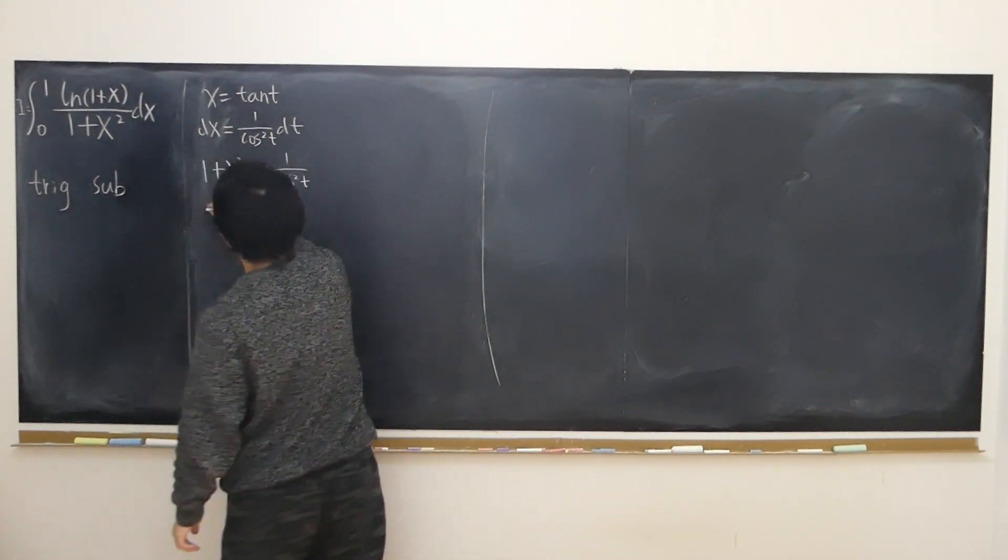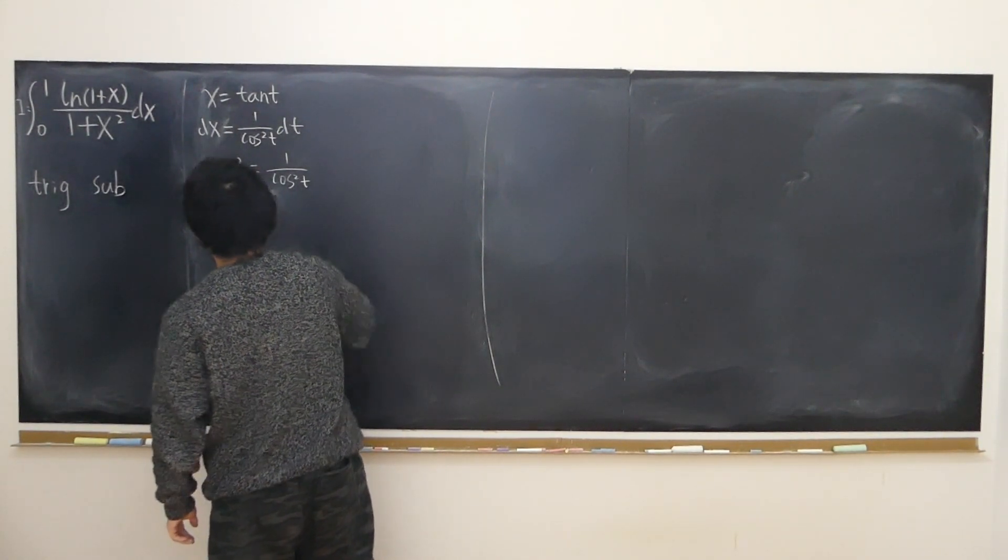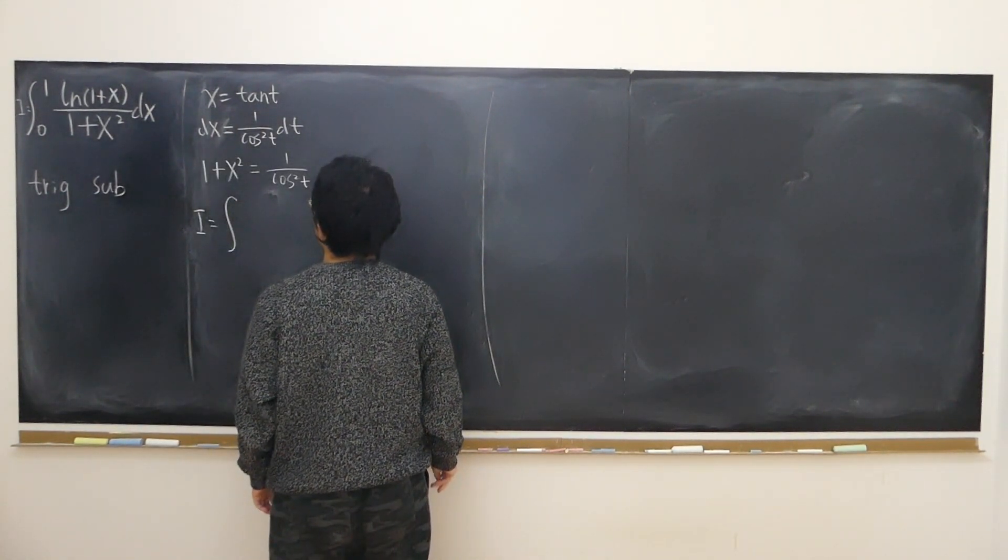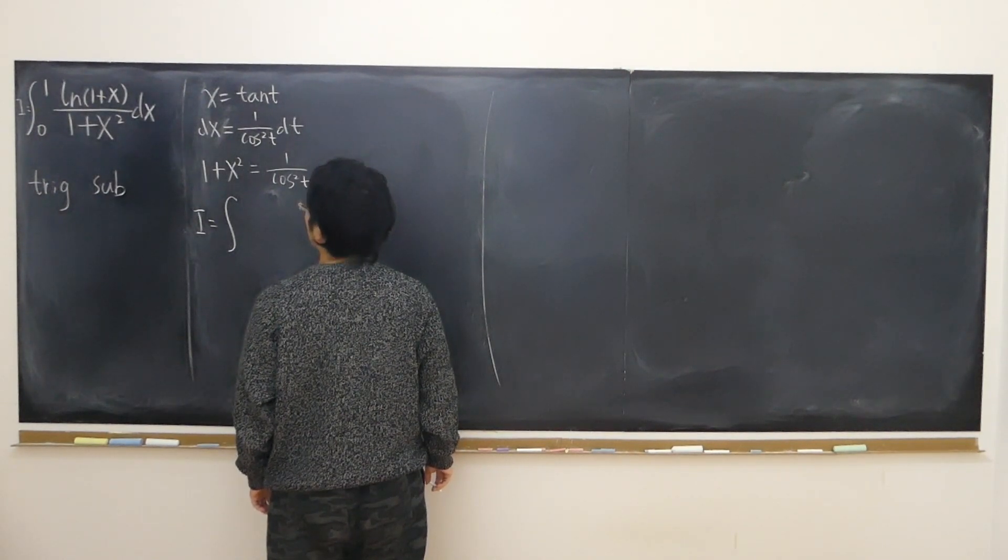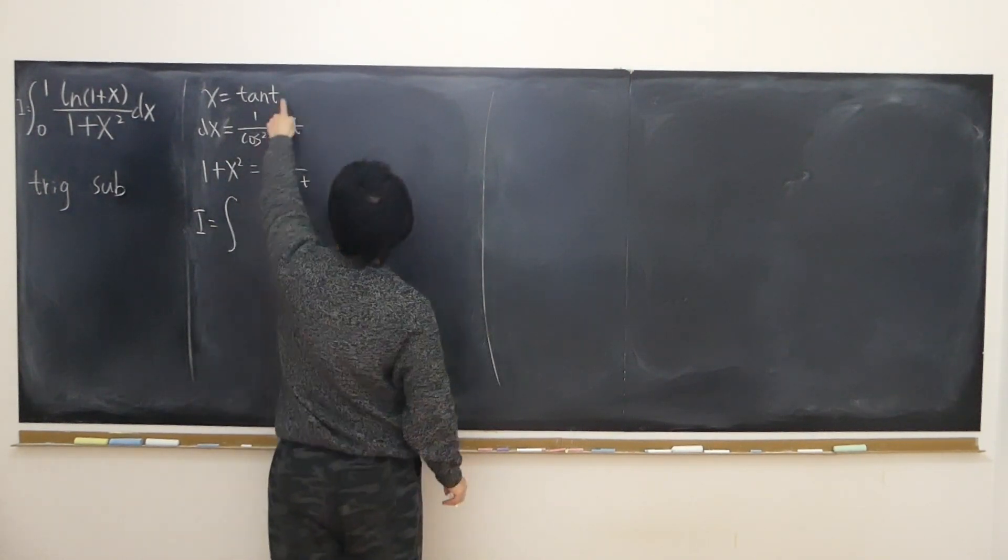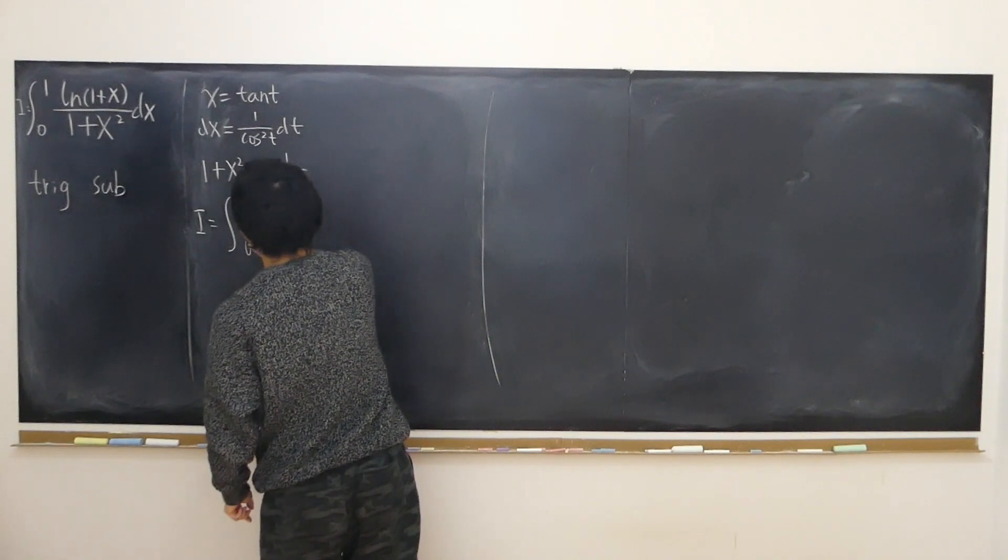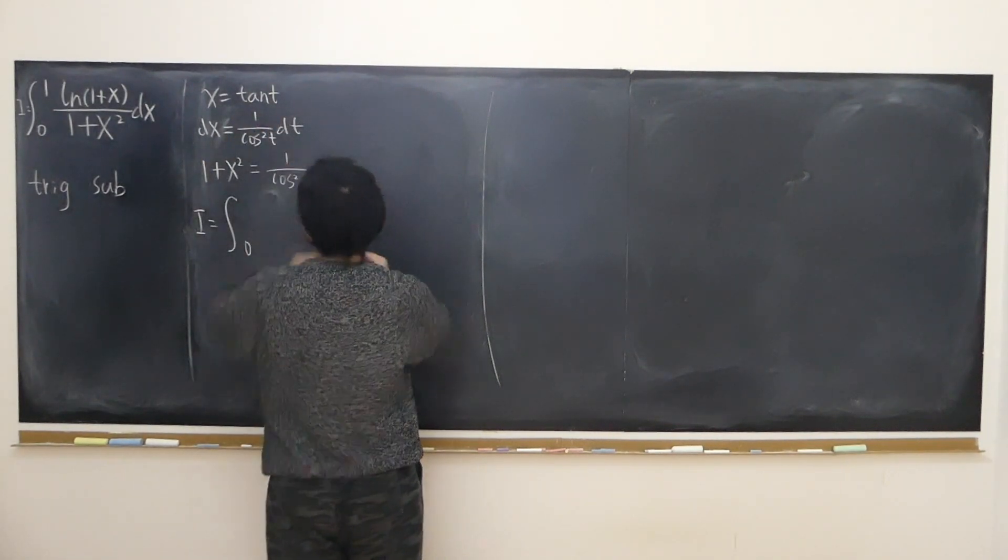And now my integral, instead of 0 to 1, we have to change the boundaries as well. So when x equals 0, t equals 0. When x equals 1, t equals pi over 4.